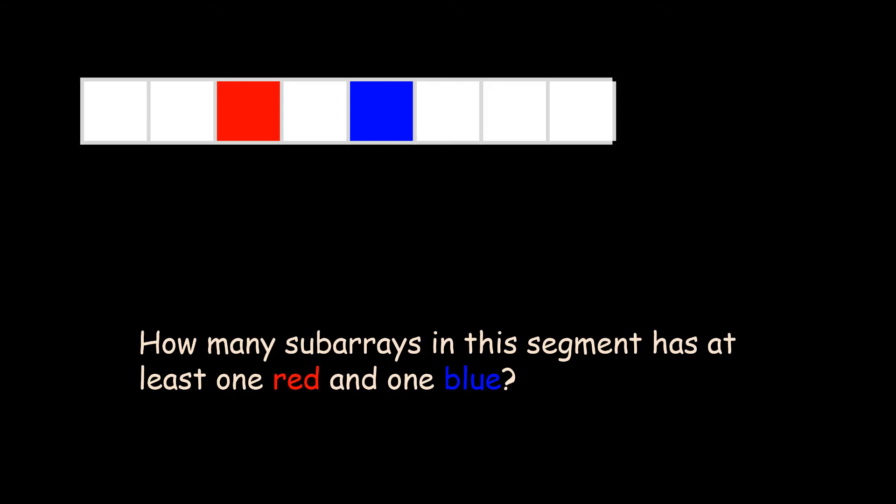How many subarrays in this segment has at least one red and at least one blue? Well, if there's exactly one red and exactly one blue in the segment, then we know that all valid subarrays must contain the red and the blue. The smallest possible subarray that contains the red and the blue is this one. We can get additional other subarrays by expanding to the left and towards the right. Aha! Do you see a pattern emerging?